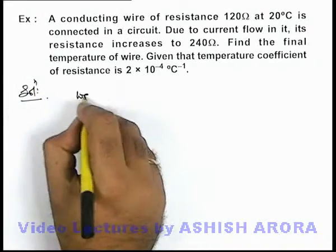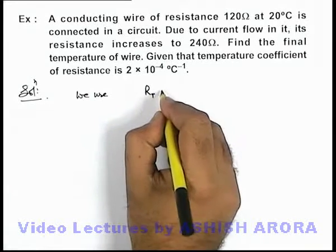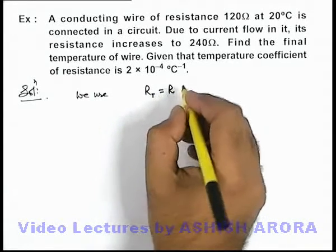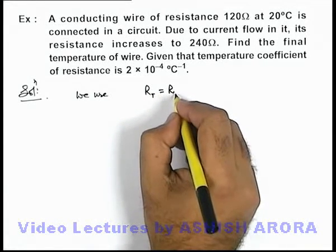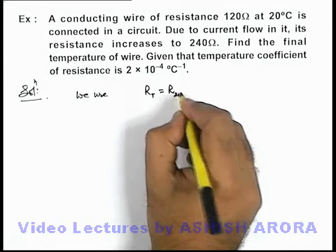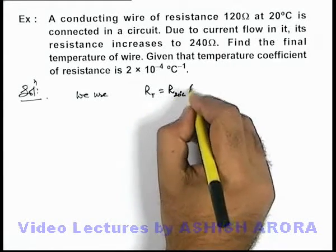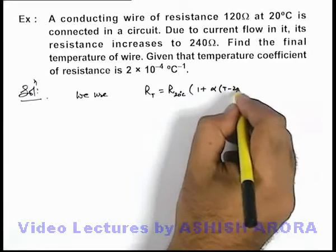Here, directly we can use: resistance at temperature T equals resistance at a reference temperature, that is 20 degrees Celsius, multiplied by 1 plus alpha times T minus 20.